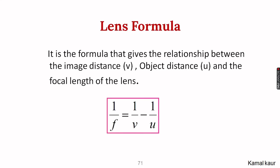For solving numerical problems on lenses, we use the lens formula, which gives the relationship between image distance, object distance, and focal length. If we know any two of these, we can find the third. The formula is 1/f = 1/v − 1/u. Comparing it with the mirror formula, which was 1/v + 1/u, you need to thoroughly learn the difference between the mirror and the lens formula.